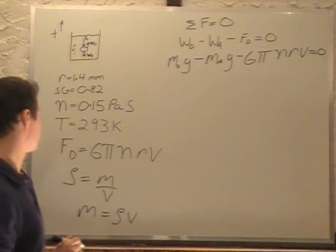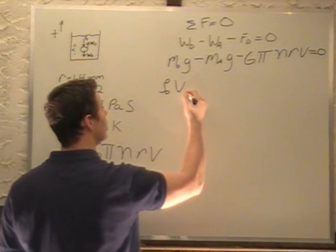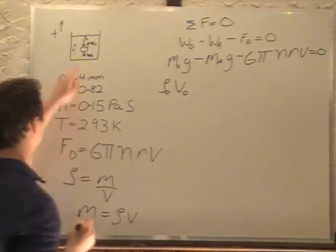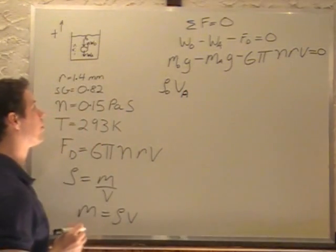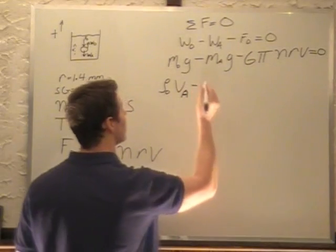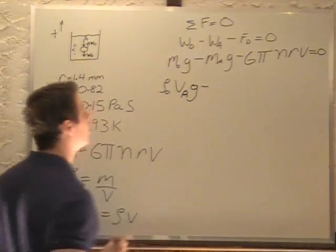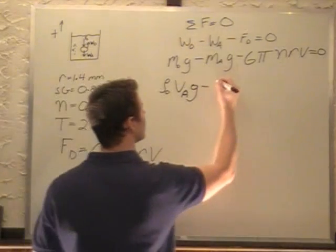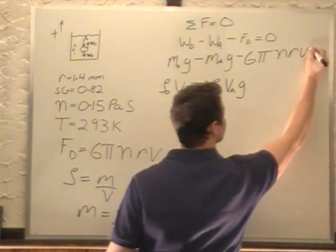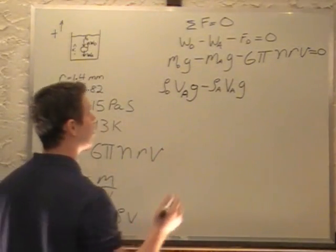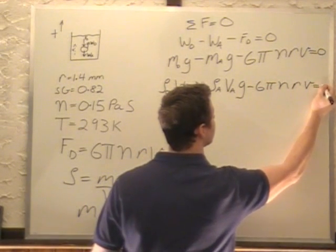So we have mass of our oil is density of our oil times volume of our oil, which is actually the volume of this air bubble. Because that's the mass of the oil displaced, the volume of the oil displaced. Times g, minus mass of the air bubble which is going to be ρ of air times V of air times g. I'm just going to write this velocity a little different with a little tail so we know that it's velocity and not volume. Minus 6πηrv equals zero.